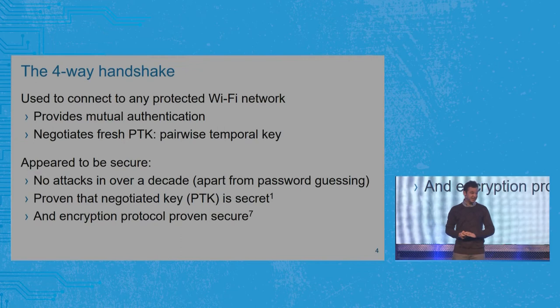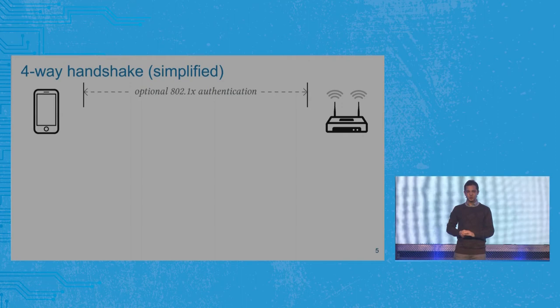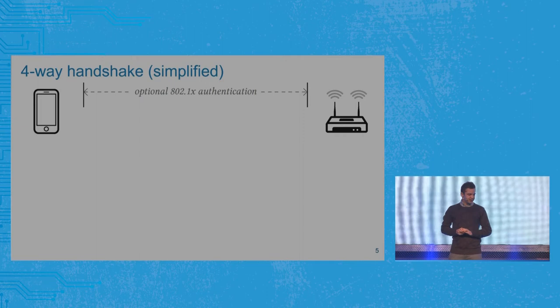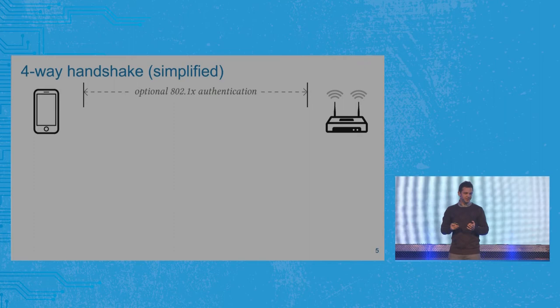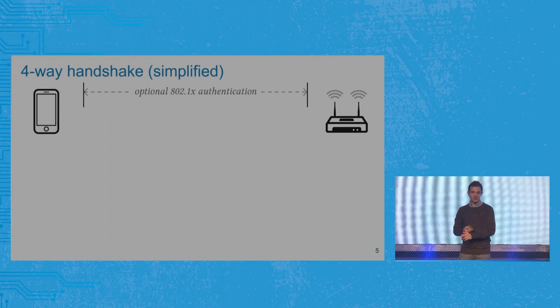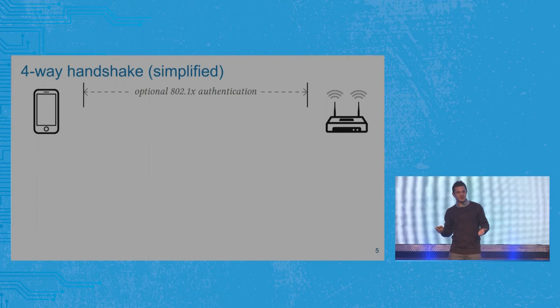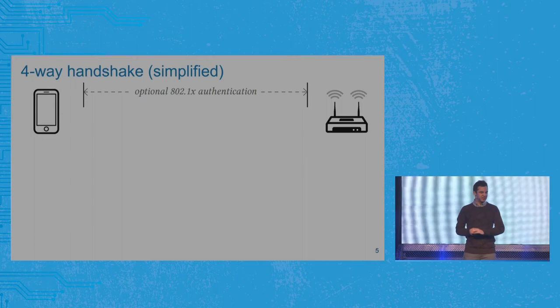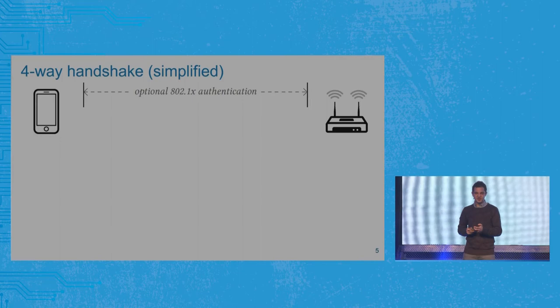In order to explain it, I'm first going to explain how the four-way handshake works. Let's assume we have a client on the left side and an access point on the right side. The client wants to connect to the network. If it's a home network with a pre-shared password, the four-way handshake can start immediately. If it's an enterprise network with a username and password, there's a first stage called the 802.1X authentication stage — basically RADIUS authentication. We don't need to know the details; we just need to know that after this stage there is a pre-shared secret between the client and the access point, and once they have that, the four-way handshake can start.